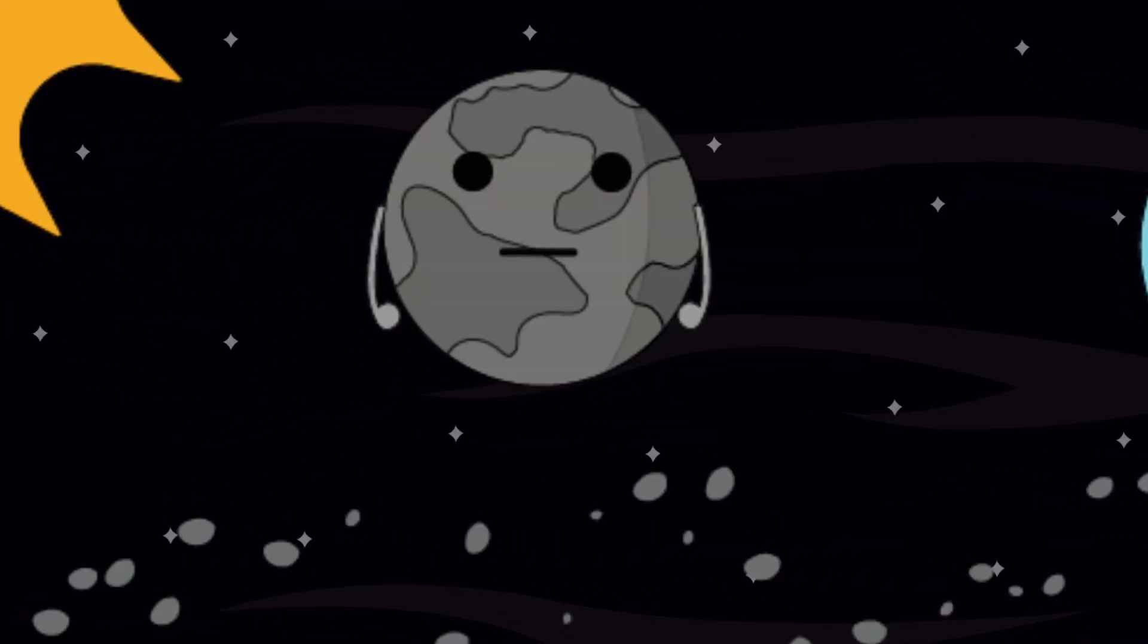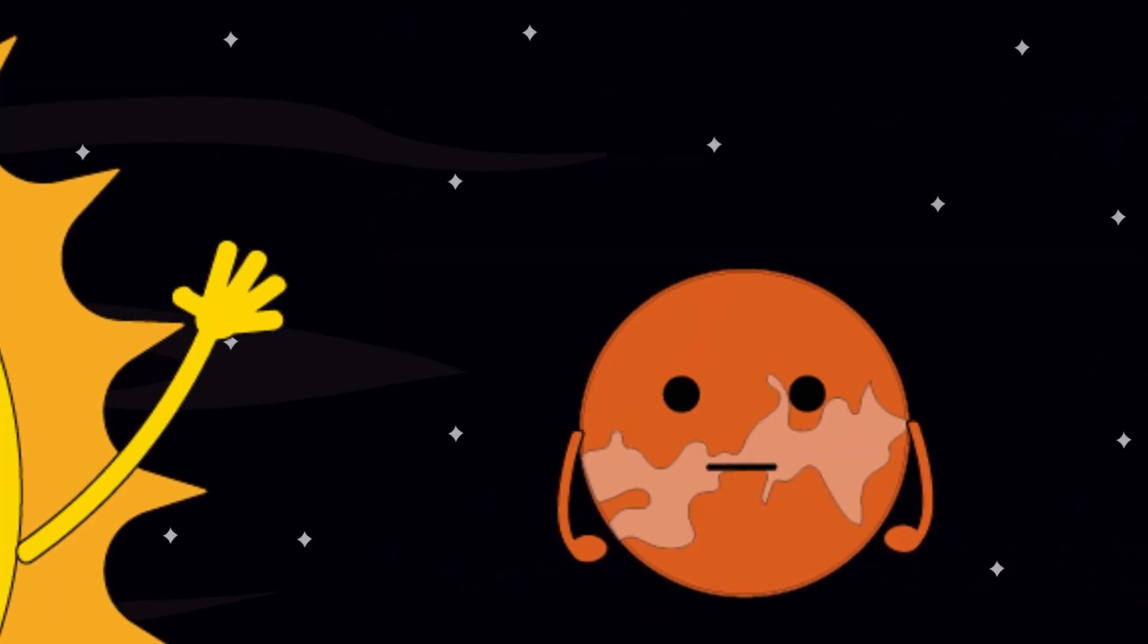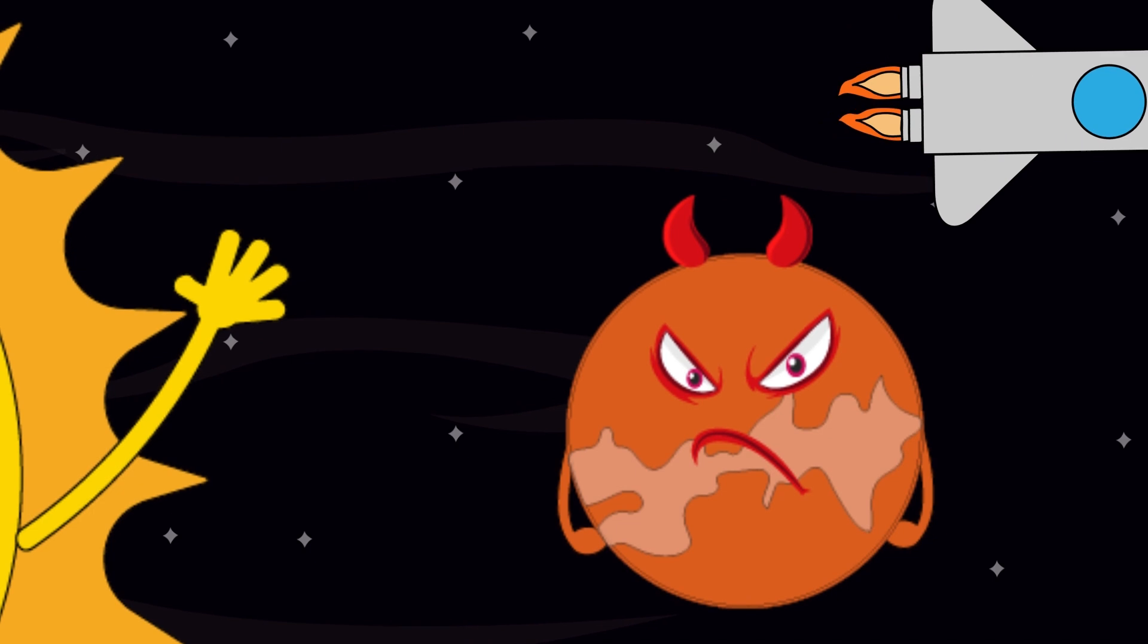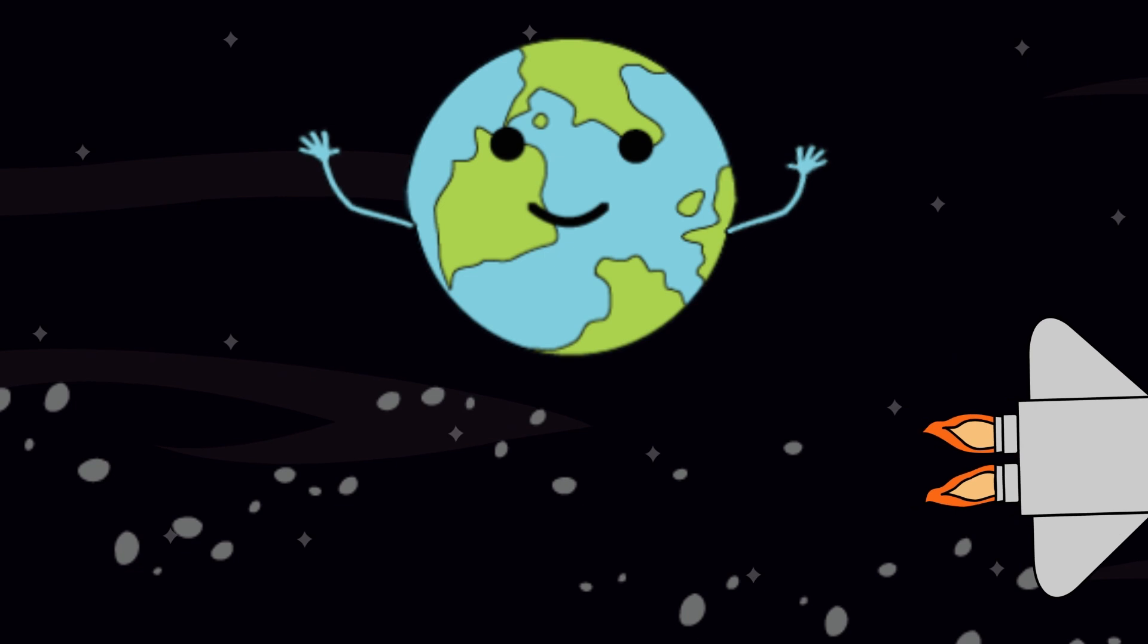You float past Mercury, a toasted marble that never learned sunscreen. Venus, Earth's evil twin, currently on fire, and then Earth, blue, fragile, and loudly pretending it has its life together.